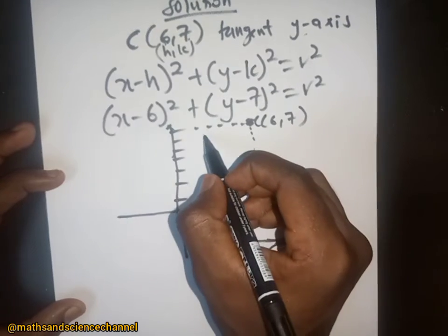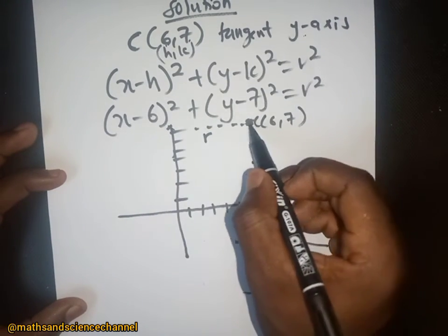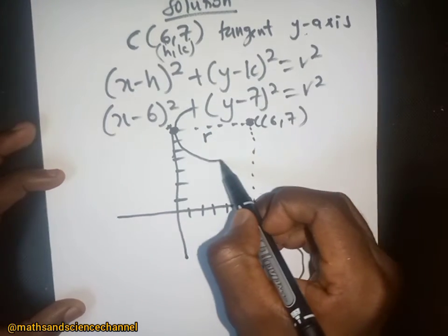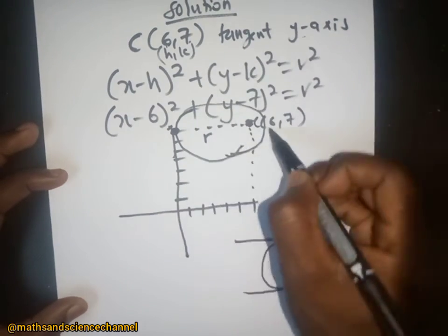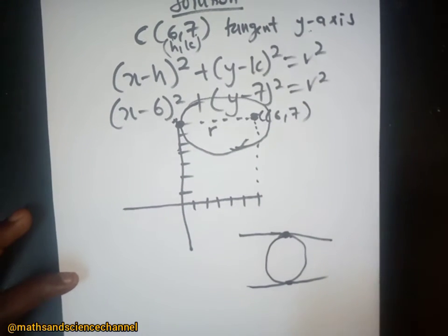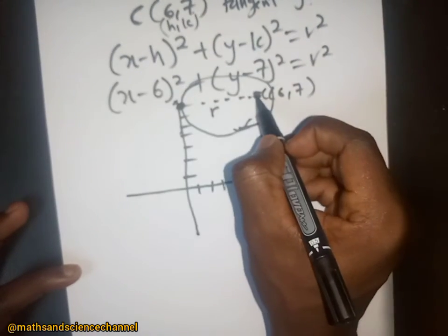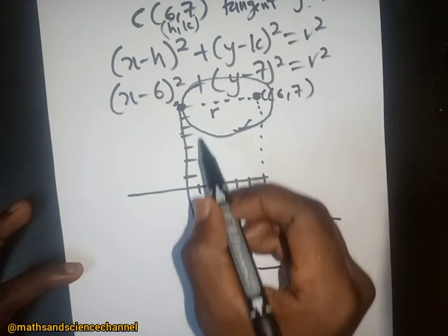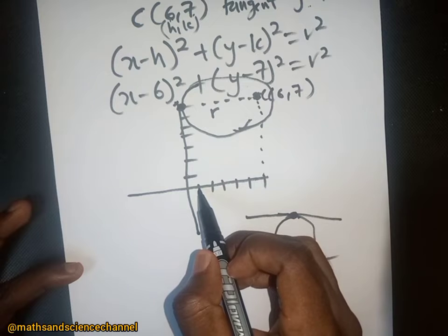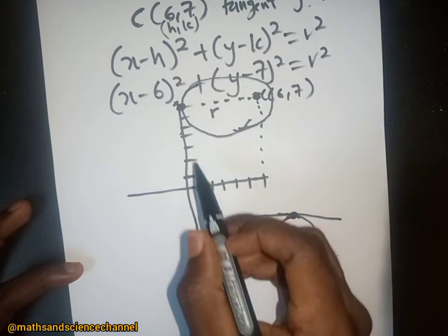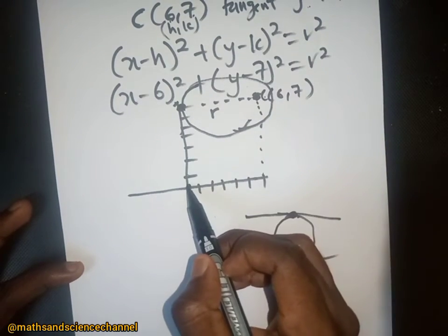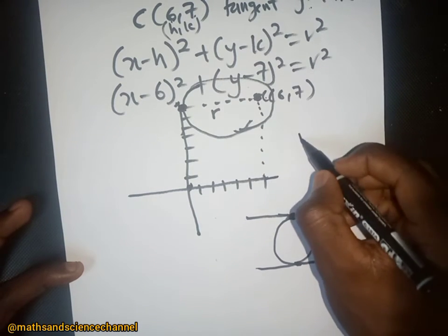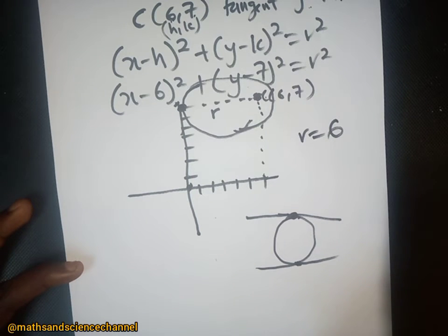Since this is the center, the distance from the center all the way to one point on the y-axis is the radius. We can draw a point on the y-axis and sketch the circle passing through it. The distance from the center to the y-axis, counting across, is six units.